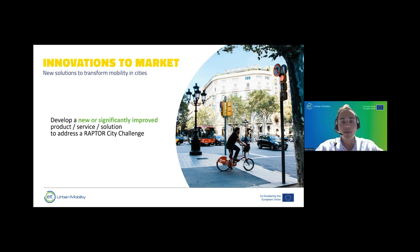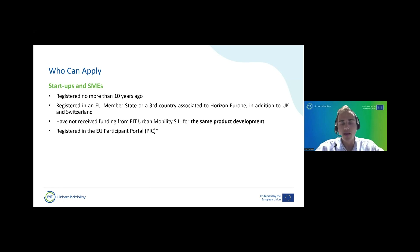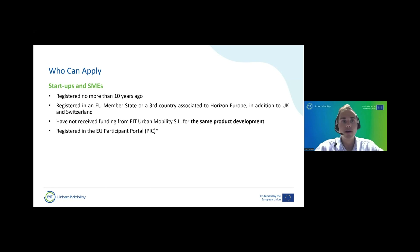Who can apply? Startups and SMEs registered no more than 10 years ago can apply. You should be registered in an EU member state or a third country associated to Horizon Europe, in addition to the UK and Switzerland. Importantly, you should not have received funding from EA Urban Mobility for the same product development. When you submit your application on our awards platform, you should register your participant portal number — called a PIC number — which is easy to find by searching online.